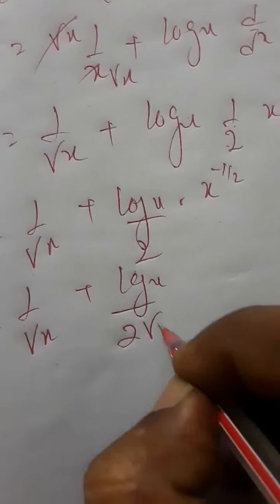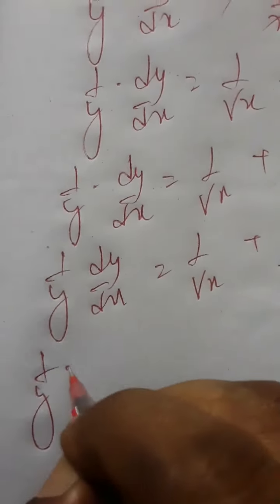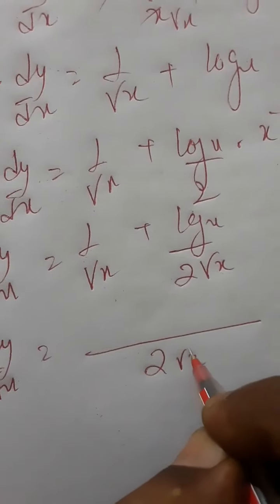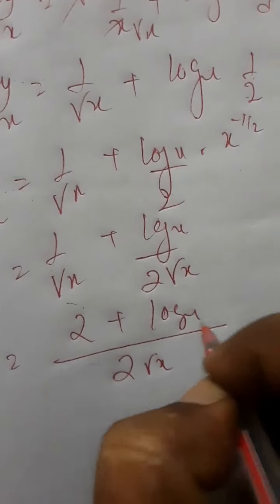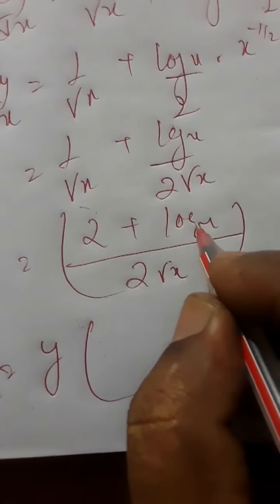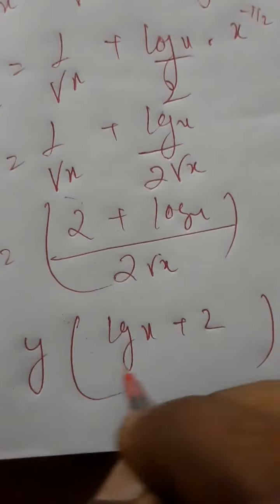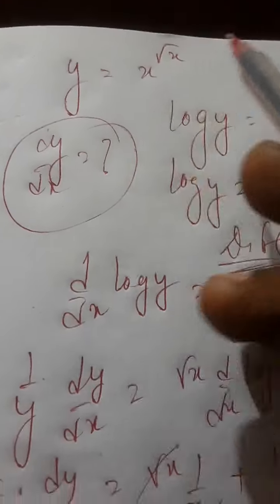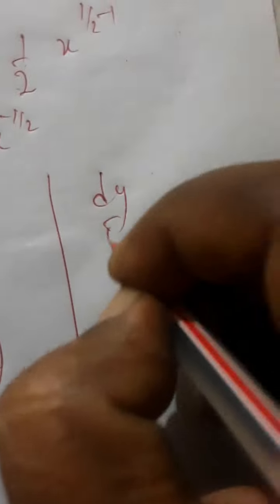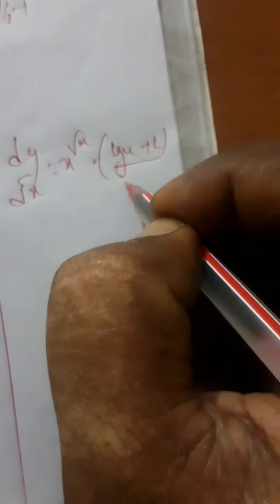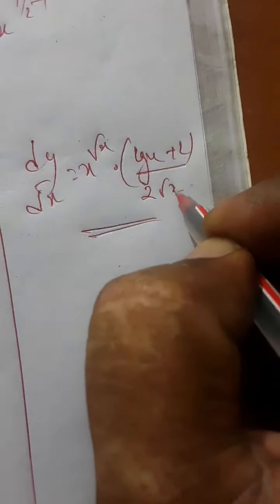So 1 by y into dy by dx is equal to log x plus 2 upon 2 root x. We know y is equal to x to the power of root x. So finally dy upon dx equals x to the power of root x, multiplied by log x plus 2 upon 2 root x.